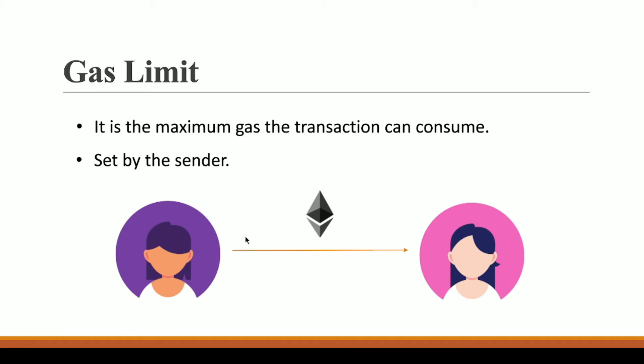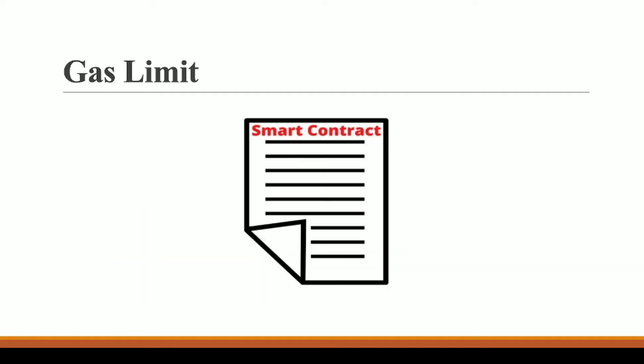Now we understand what Ethereum gas limit is and that it is set by the sender — but why do we have it? We have already learned about Ethereum gas and gas price, and now we have another term: gas limit. To understand its purpose, consider our smart contract — a program deployed on the Ethereum blockchain that also changes the state of the blockchain. So when you call a function of your smart contract that changes data on the blockchain, that is a transaction.